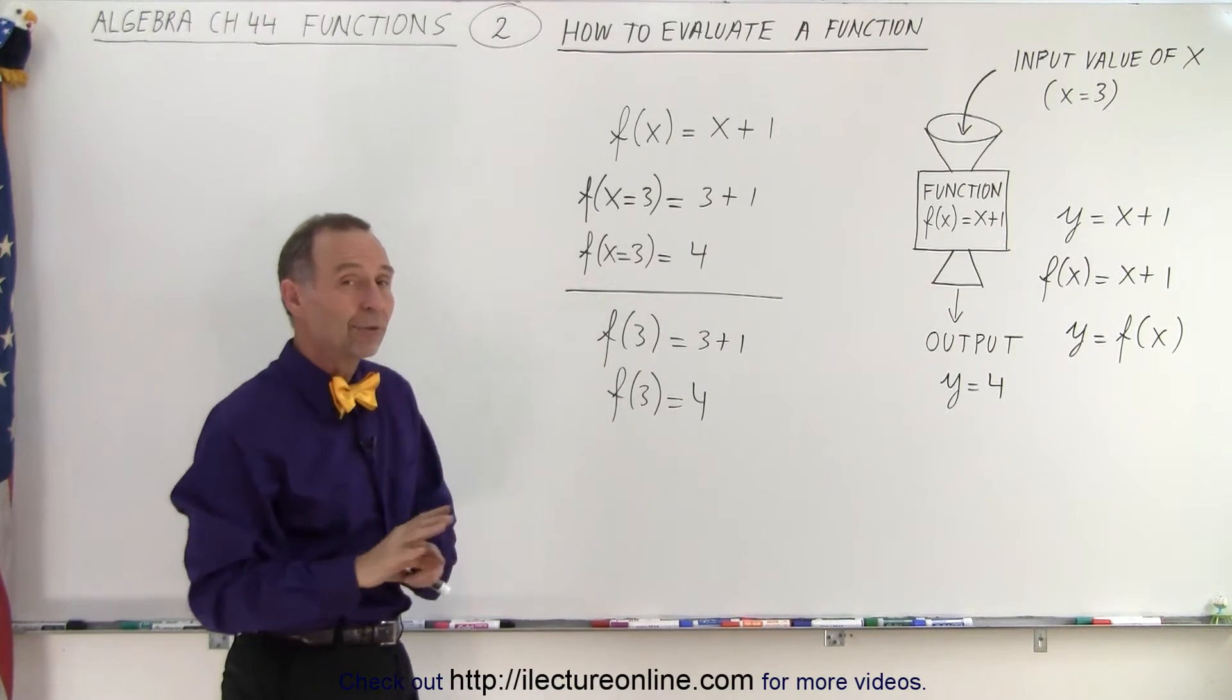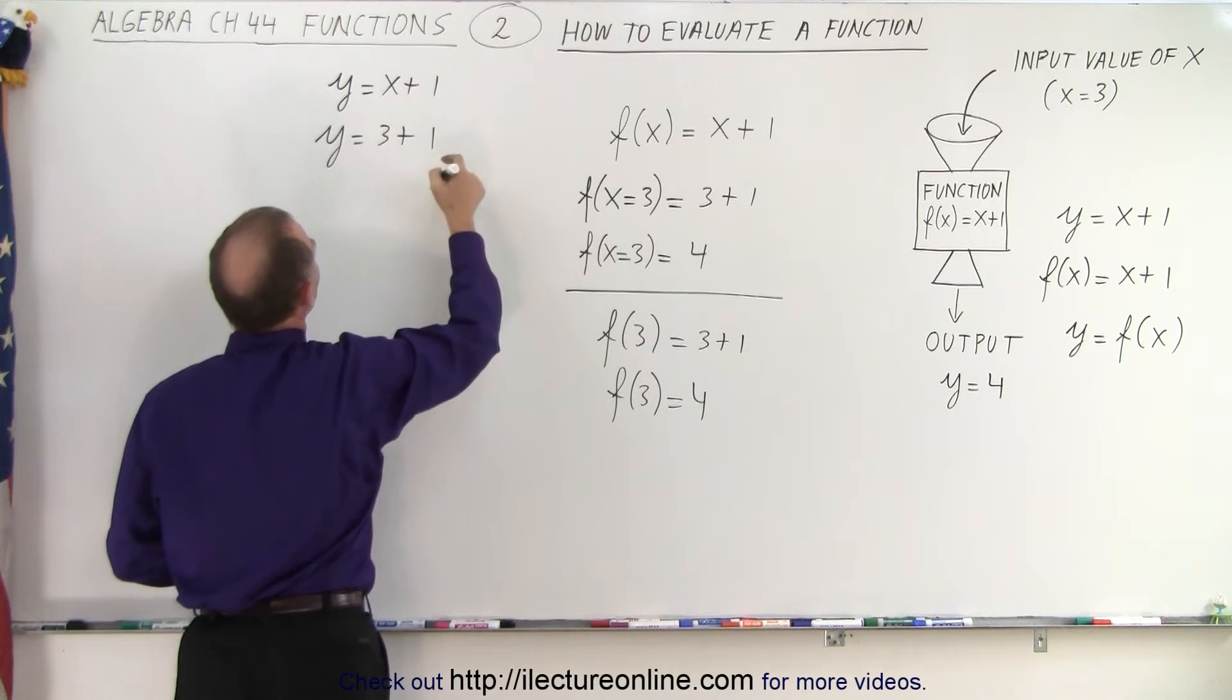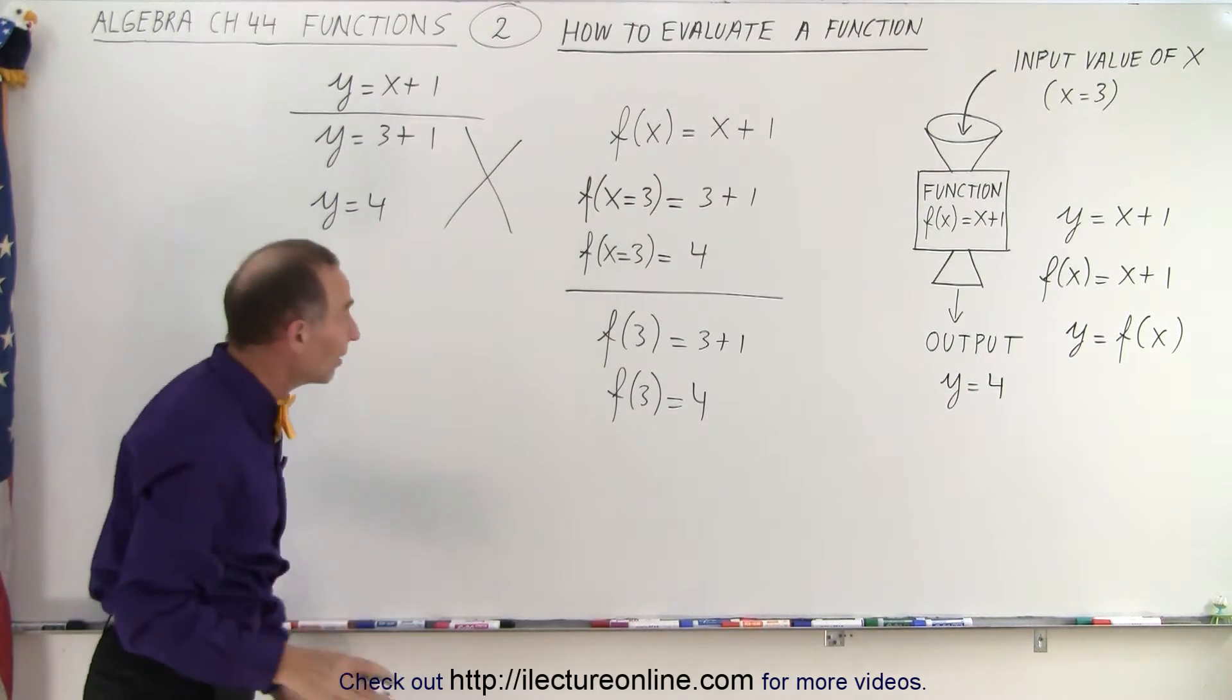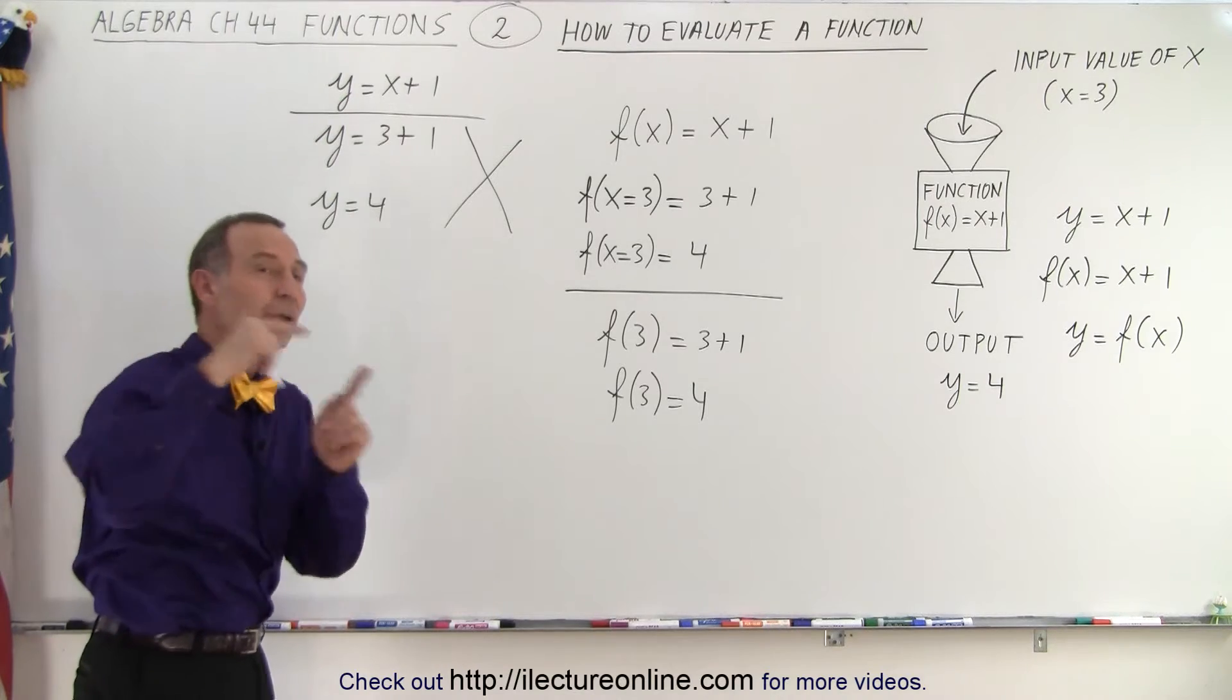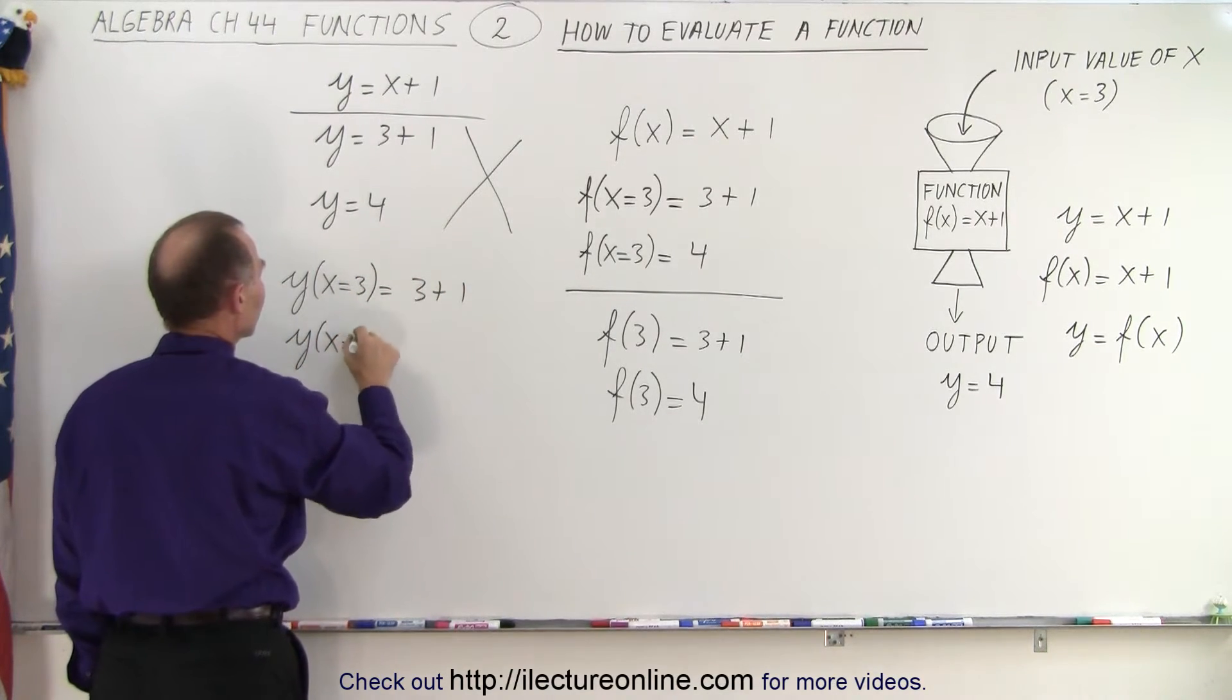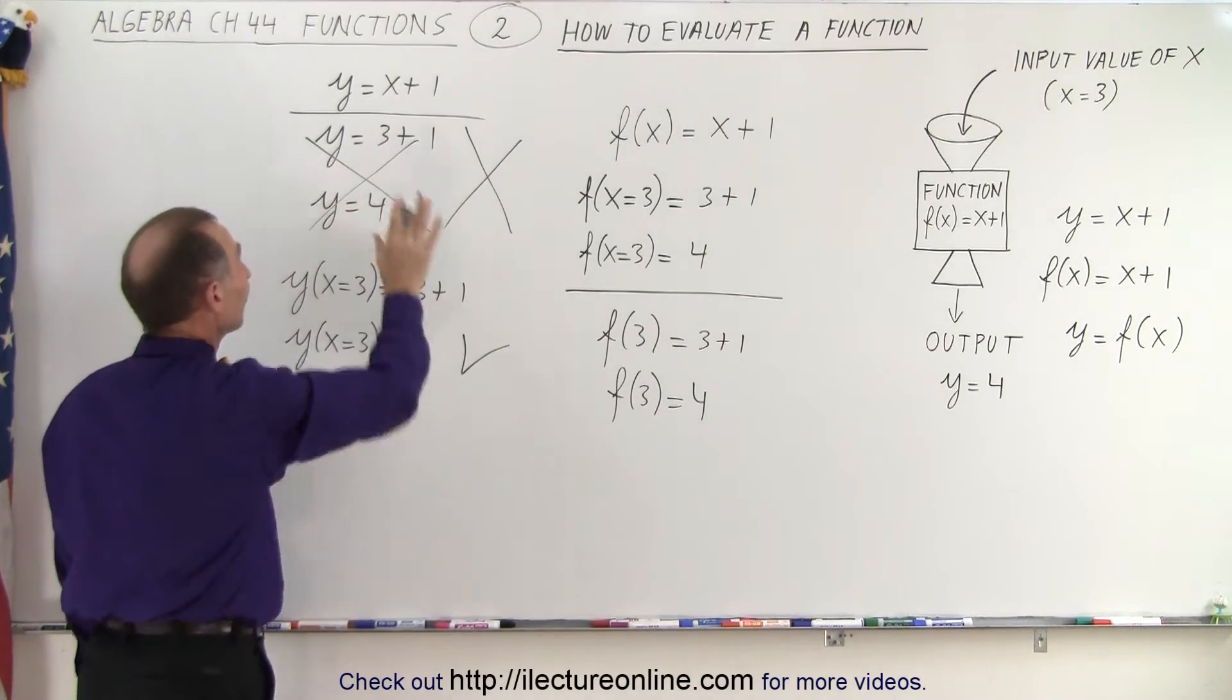Now, there's another thing that some people will do, which is absolutely wrong. They'll do this: they'll go y = 3 + 1. So they'll start with the function y = x + 1. Now, they evaluate it. They simply replace x by 3 and they go y = 4. Well, that's of course not correct. Y isn't equal to 4. Y is equal to x + 1. Y is only equal to 4 when you evaluate it.